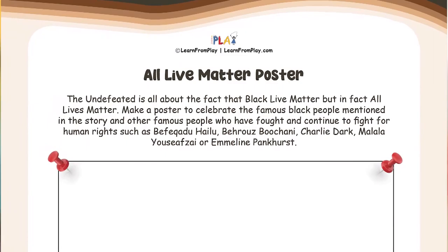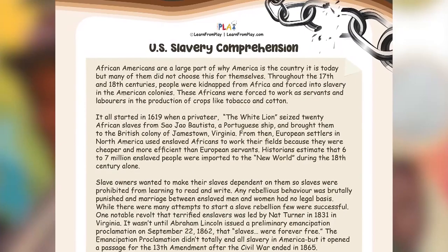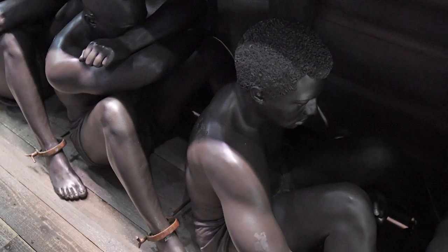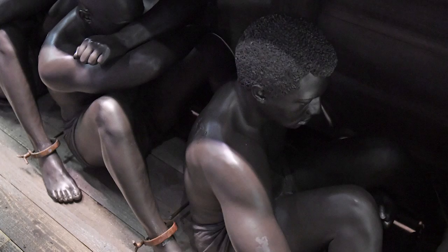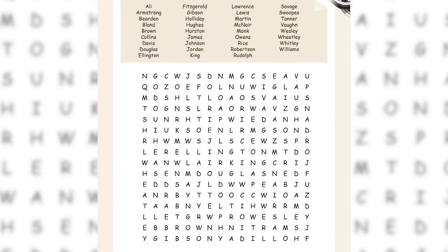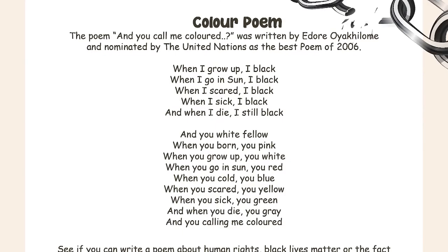The second activity asks students to design a poster to draw attention to the fact that all lives matter. The third activity is a comprehension on slavery in America and looks at the more than six million African people who were stolen from their homes and forced to live and work in America. The fourth activity is a fun word finder using the names of 38 of the people mentioned in the story.